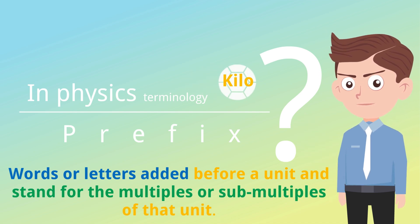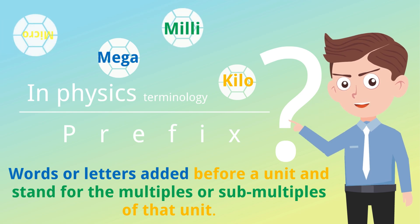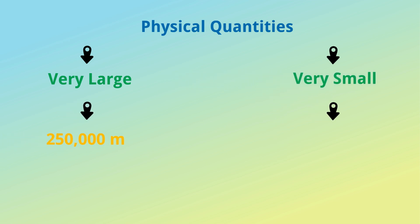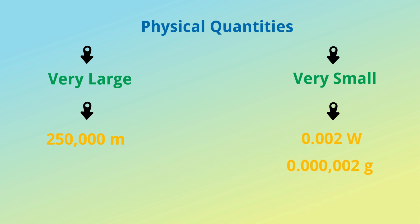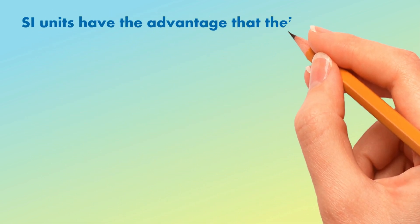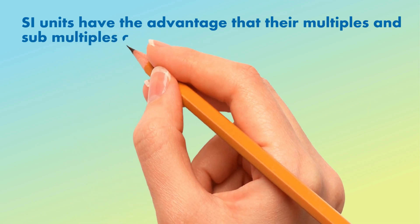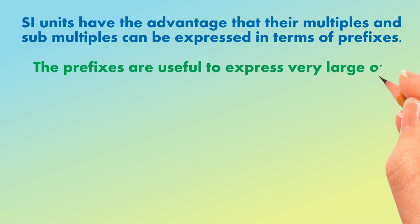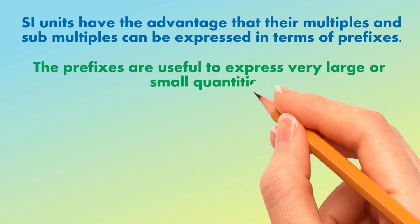For example: 250,000 meters, 0.002 watt, and 0.000002 grams, etc. Some quantities are either very large or very small. SI units have the advantage that their multiples and submultiples can be expressed in terms of prefixes. The prefixes are useful to express very large or very small quantities.